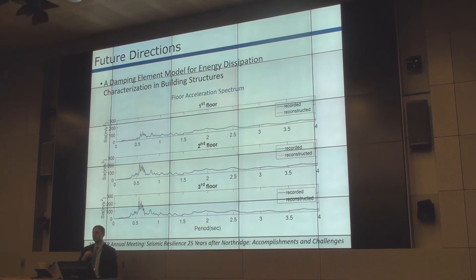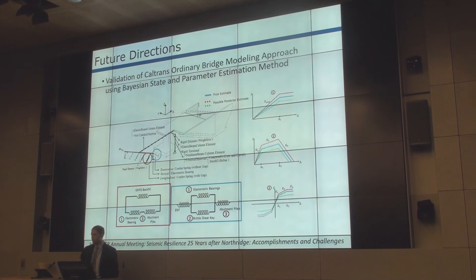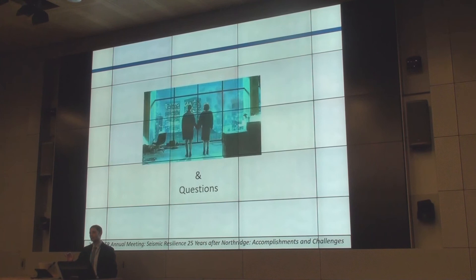We are also looking into how much diaphragm flexibility matters — we always assume diaphragms are stiff or rigid, and using the data we can see how good that assumption is. Finally, the work we are doing right now is to use CS-SMIP data to validate our bridge models, very similar to what we did for buildings. This was funded through Caltrans; we have a series of models for ordinary bridges with some enhancements, and we want to make sure they are reasonable. Thank you very much for listening to my 100-mile-per-hour presentation — I'll take your comments.